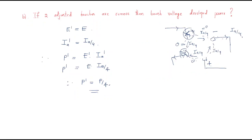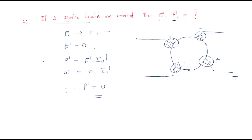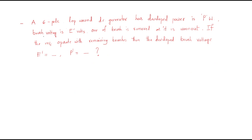To summarize: for a 4-pole machine, if two adjacent brushes are removed, power becomes 1/4 of original. If two opposite brushes are removed, power generation completely becomes zero. Next problem: a 6-pole lap wound DC generator has developed power P. Given data — 6 poles, lap wound. For lap winding, the number of parallel paths equals the number of poles, so parallel paths = 6.